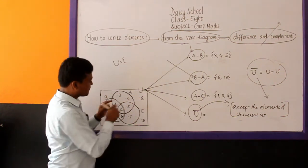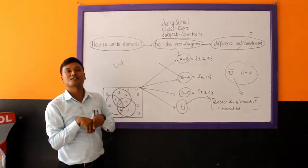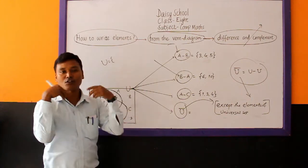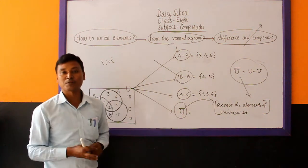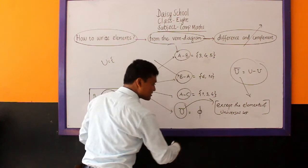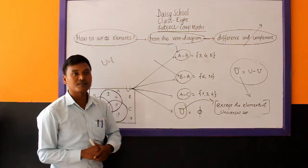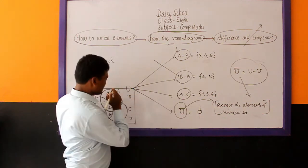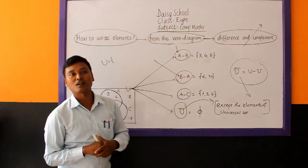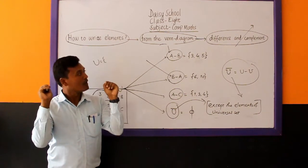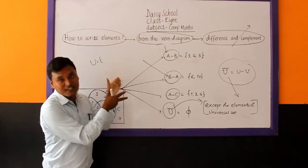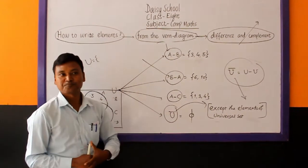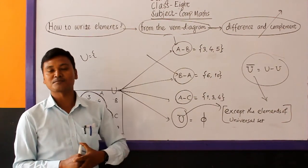Except the elements of universal set — that means we don't have any remaining elements. So U complement is actually an empty set, because we don't have any remaining elements in the given Venn diagram. So today we did how to write the elements of the given set operation — that may be related to intersection, union, complement, difference — directly from the given Venn diagram. Please don't forget to like and subscribe. Thank you.